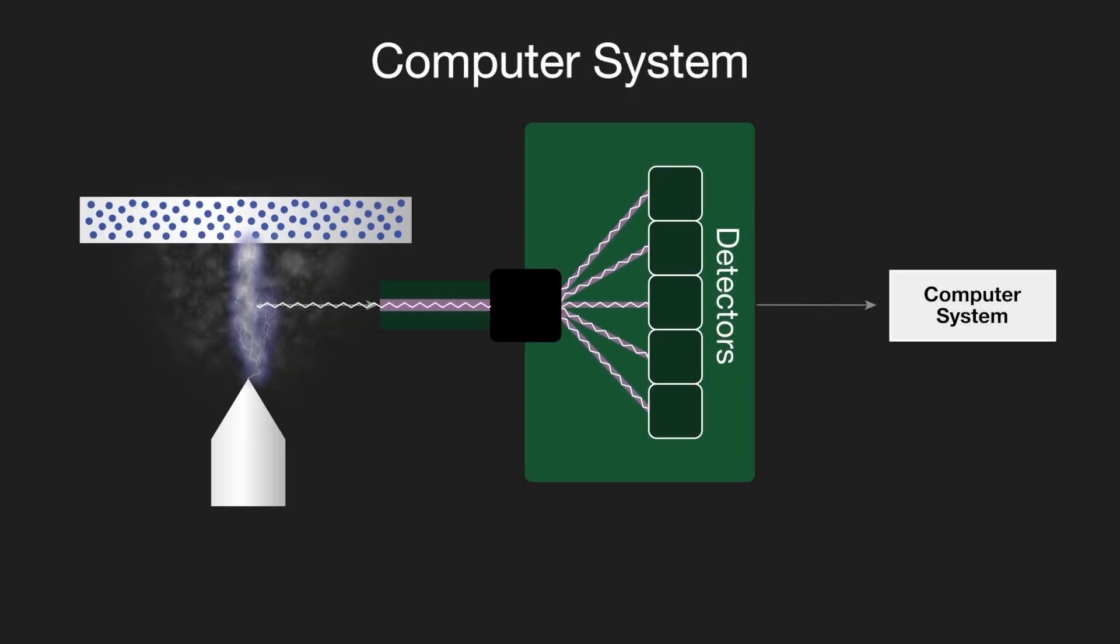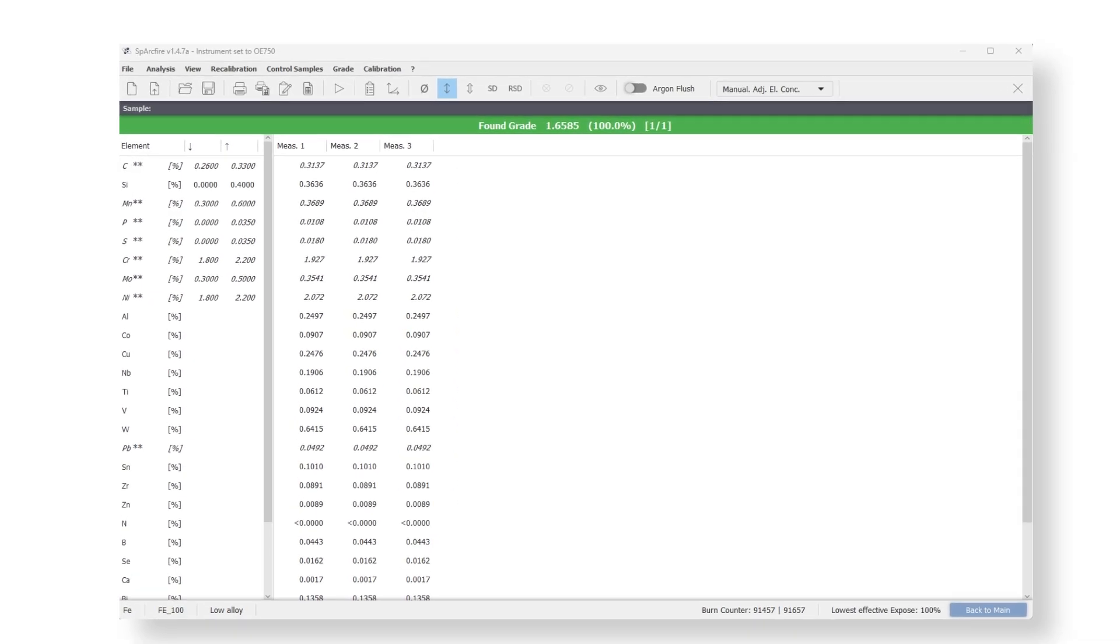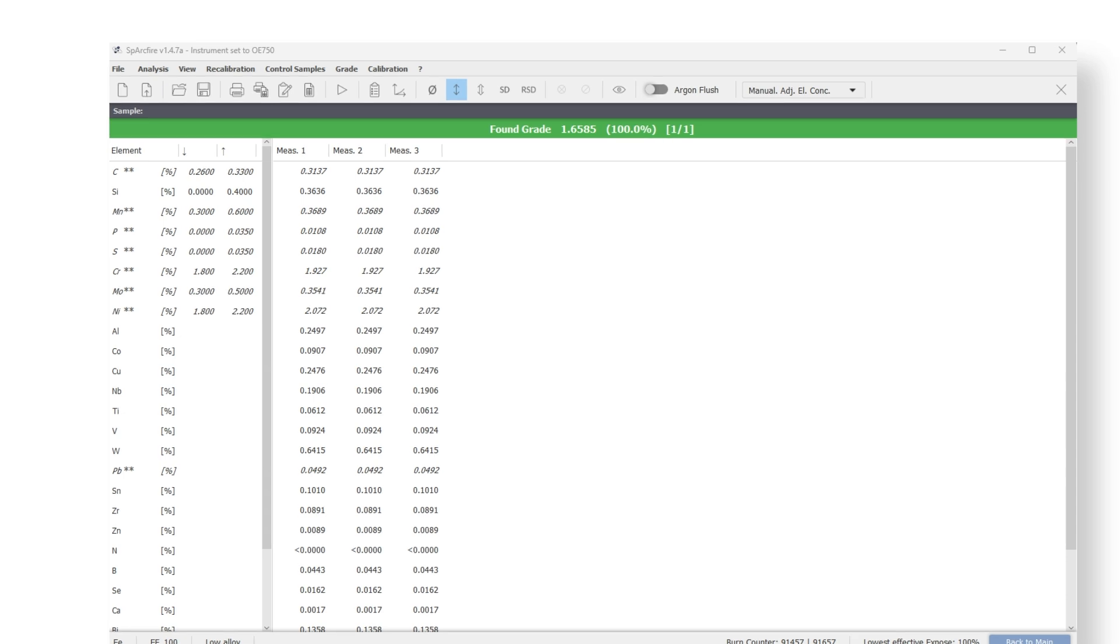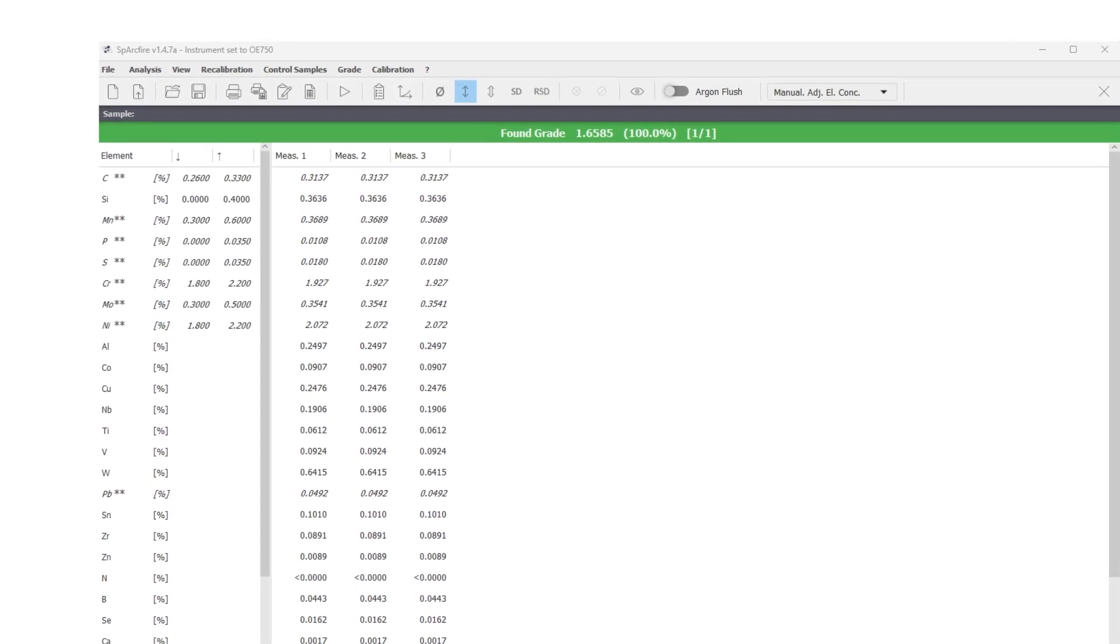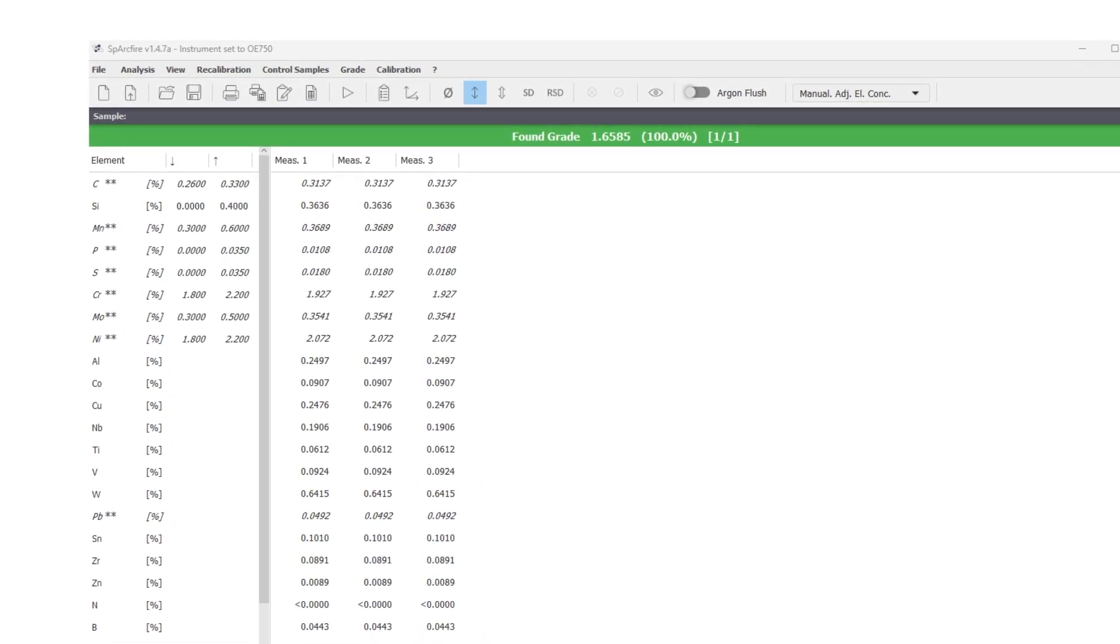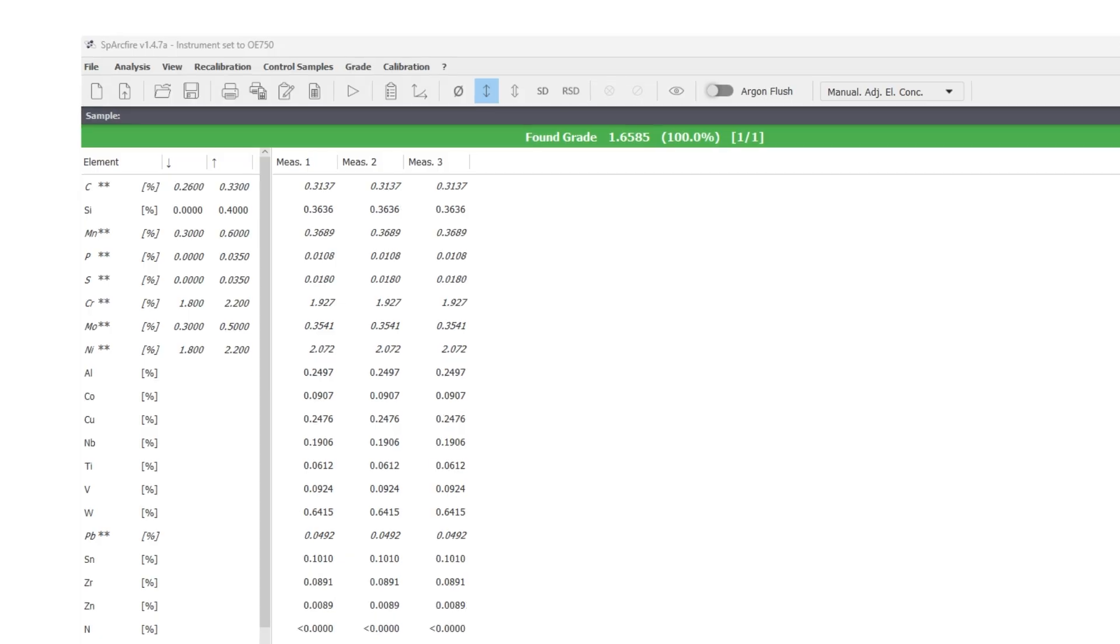The third component is the computer system. The computer system acquires the measured intensities and processes this data via a predefined calibration to produce elemental concentrations. The user interface ensures minimal operator intervention with results clearly displayed, which can be printed or stored for future reference.